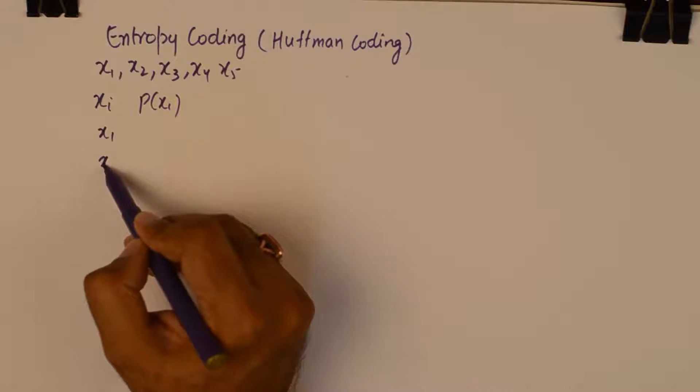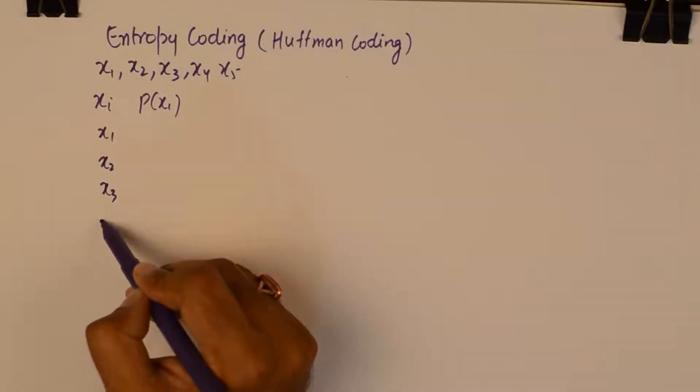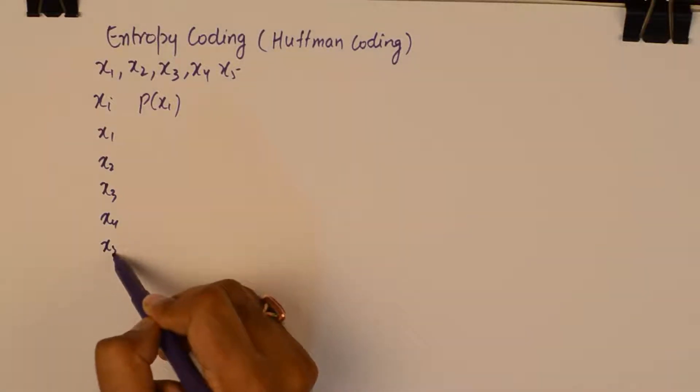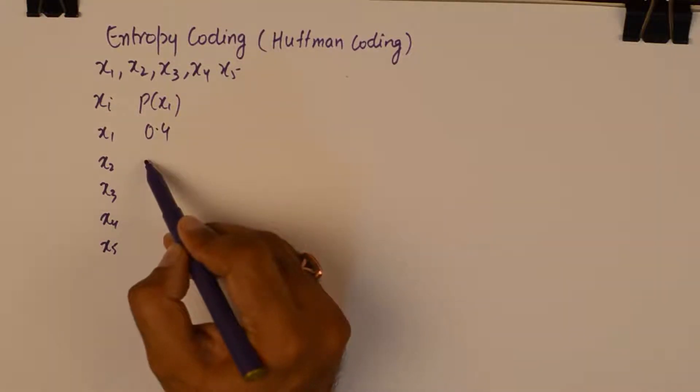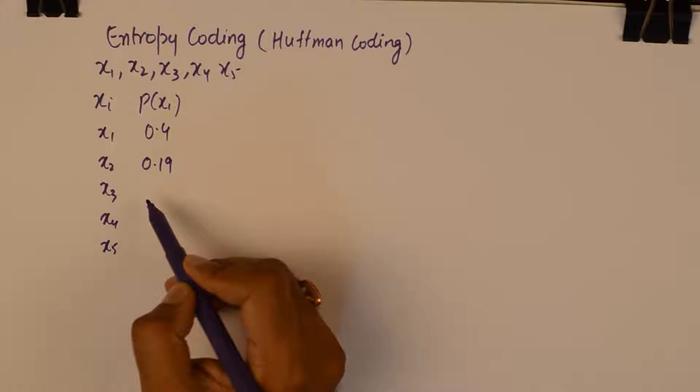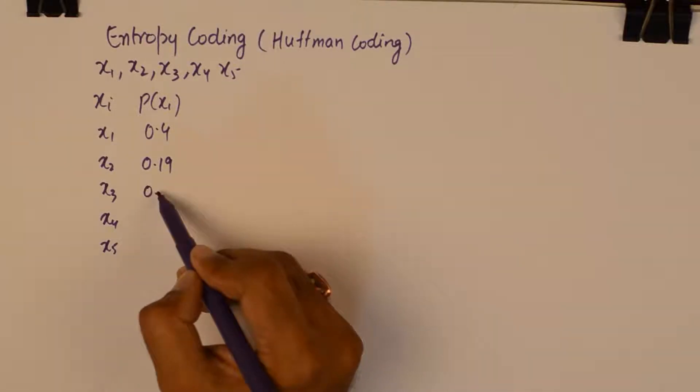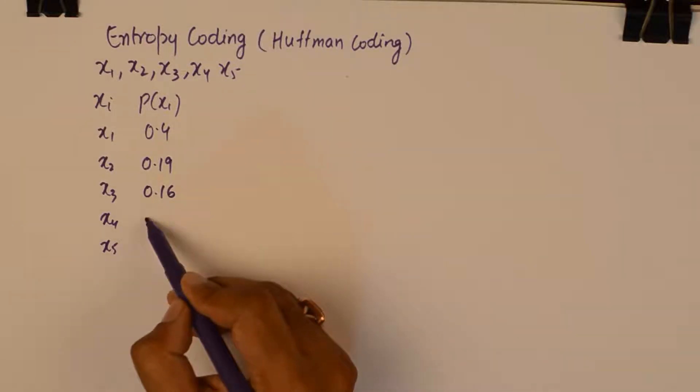So I will write down x1, x2, x3, x4, x5. x1 has the probability of 0.4, x2 has 0.19, x3 has 0.16, x4 has 0.15 and x5 has 0.1.